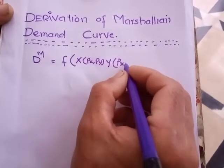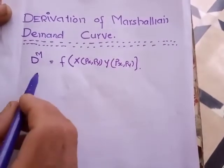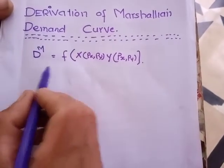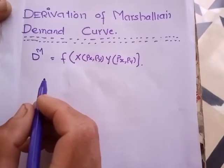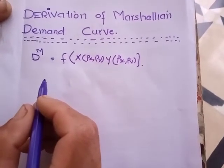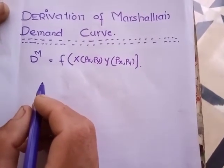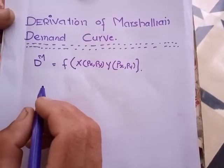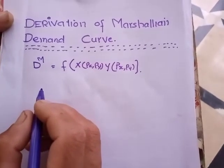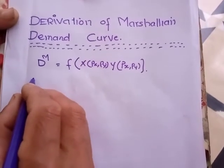And commodity y, which is also a function of price of x and price of y. This is the Marshallian demand curve. Marshallian demand curve is also called uncompensated demand curve. Today we derive it mathematically.